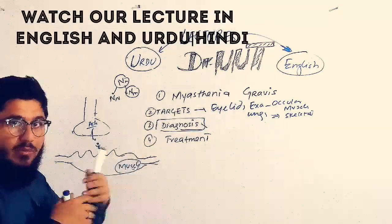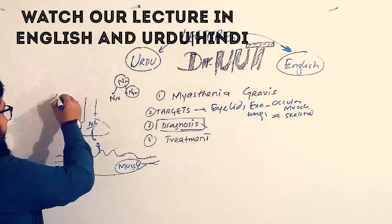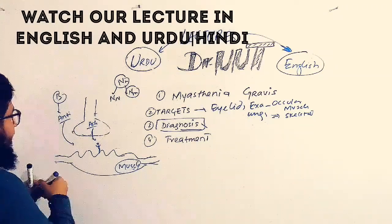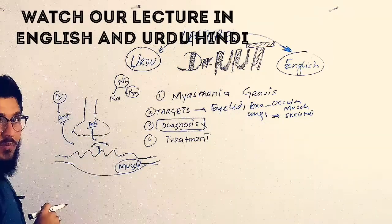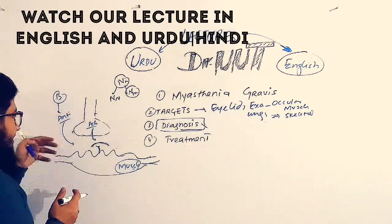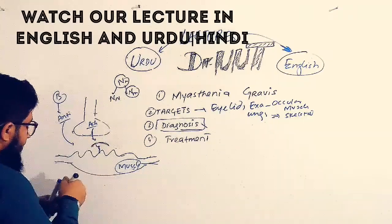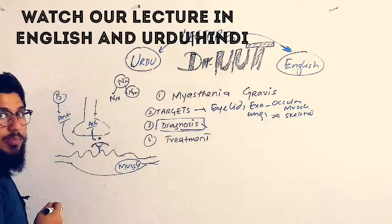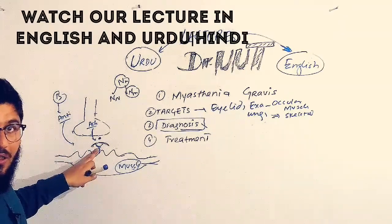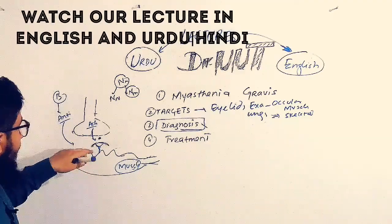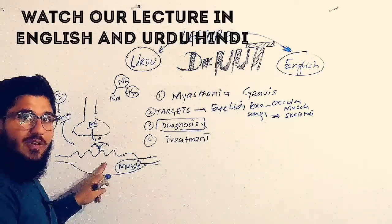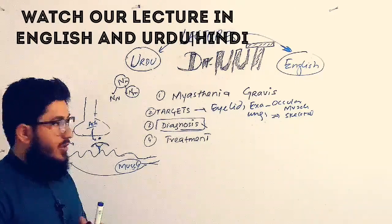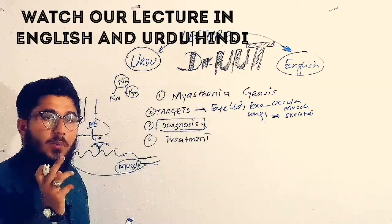Myasthenia Gravis is an autoimmune disease. In this condition, your immune system becomes abnormal — B cells release antibodies, and these antibodies come and cover the nicotinic receptor. So acetylcholine is available but not able to bind to the receptor because it has been covered by antibodies. The signal for contraction is not given, the muscle does not receive the signal, and therefore becomes unable to contract — this is what we feel as Myasthenia Gravis or muscle weakness.